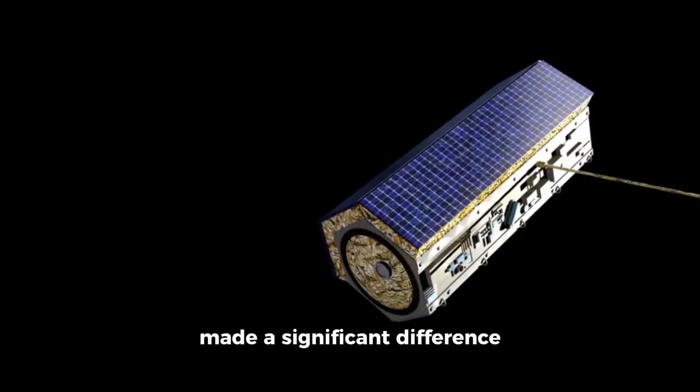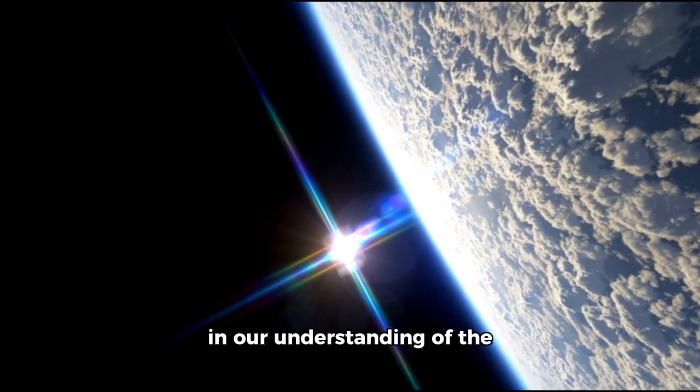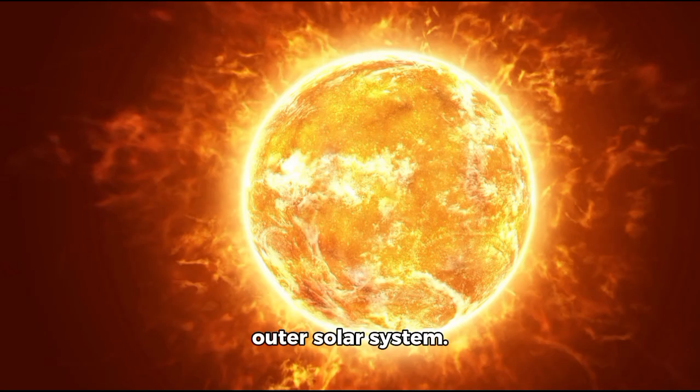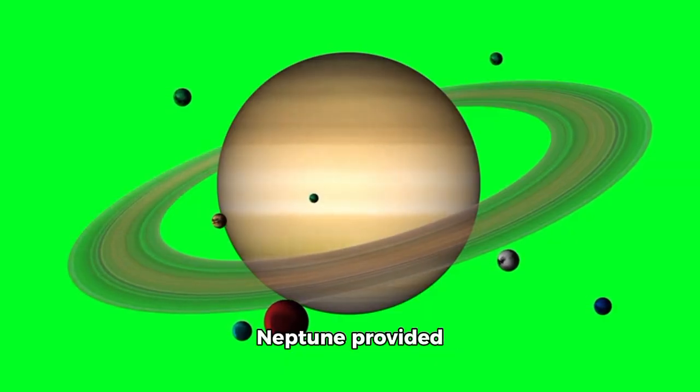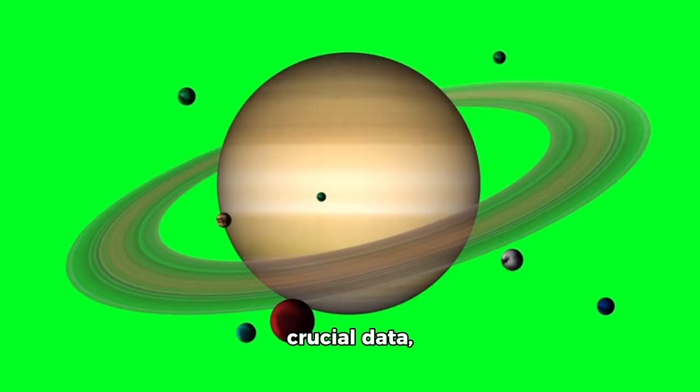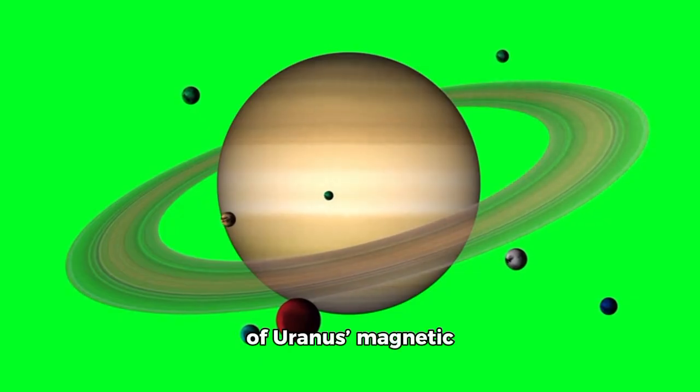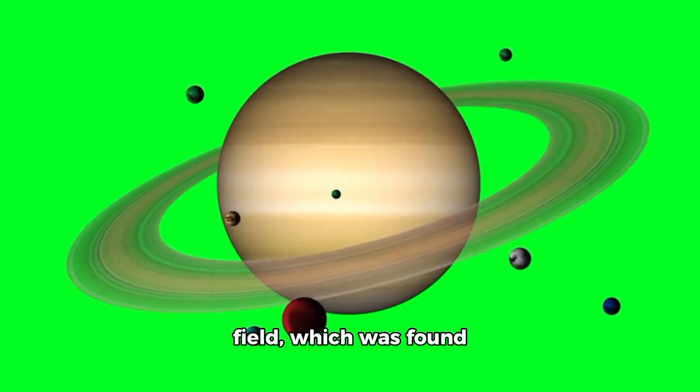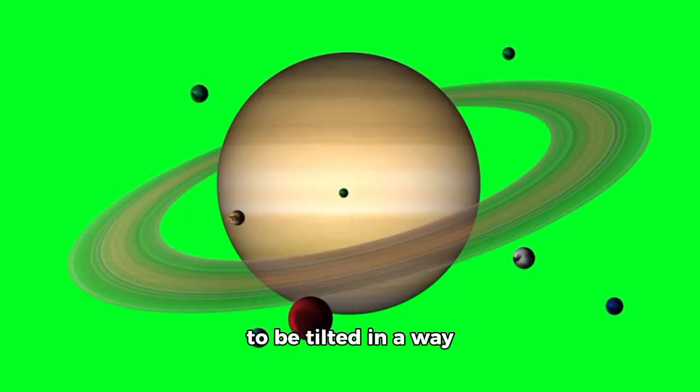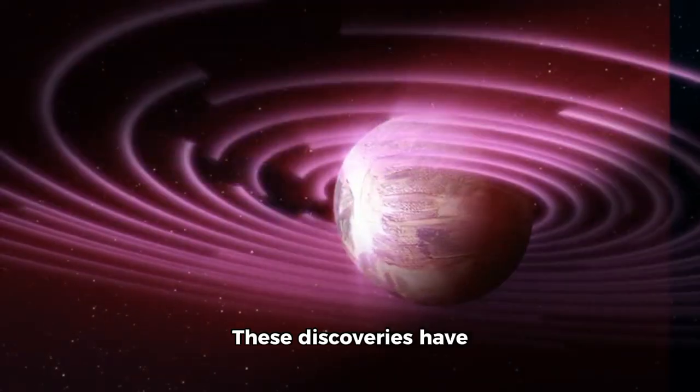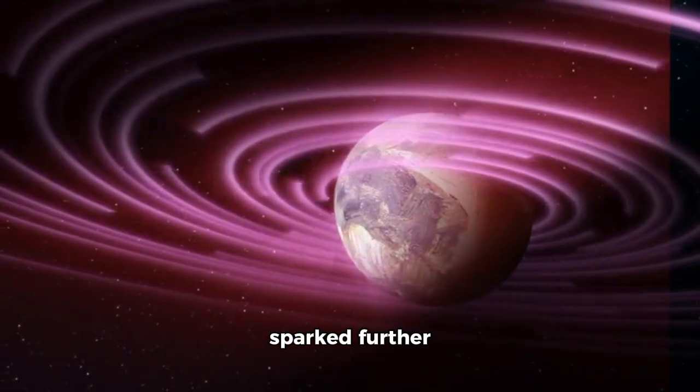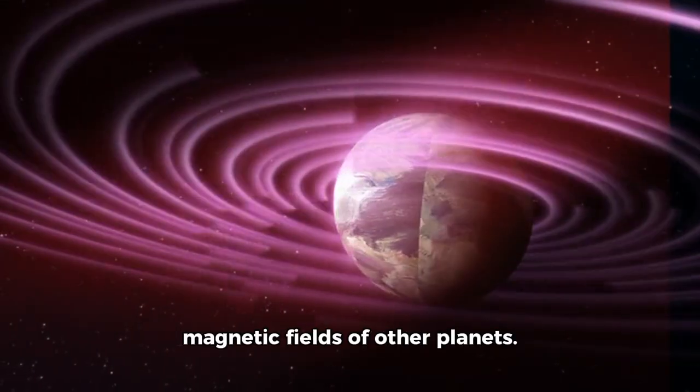Explorer 2's journey has also made a significant difference in our understanding of the outer solar system. Its passes by Jupiter, Saturn, Uranus, and Neptune provided crucial data, particularly its views of Uranus' magnetic field, which was found to be tilted in a way that challenged models of planetary magnetism. These discoveries have sparked further investigations into the magnetic fields of other planets.